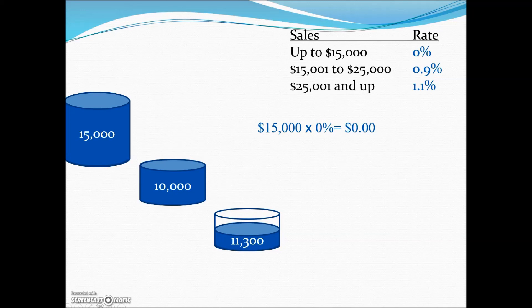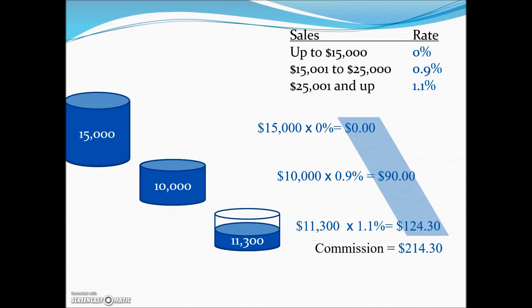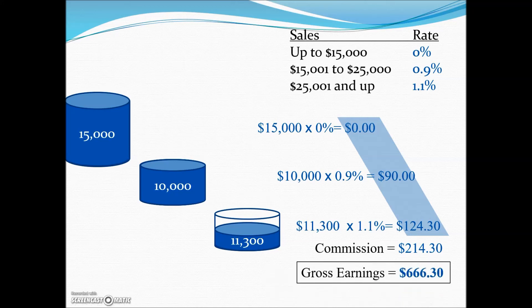The $15,000 in base sales is covered by the salaried amount with no commission. The 0.9% incentive on sales between $15,000 and $25,000 garners $90. The excess beyond $25,000 at a 1.1% commission rate adds further earnings. Together, the commission beyond the salary totals $214.30. With a weekly salary of $452, adding the $214.30 commission gives the salesperson gross earnings of $666.30.